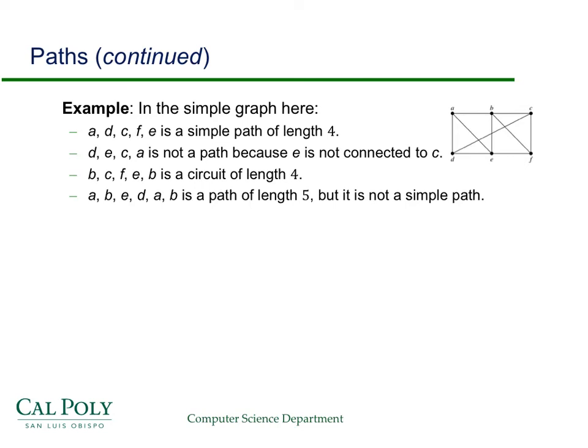This is just a simple example to illustrate paths. This path, D, E, C, A, is actually not a path. If I try to go from D and then go to E and then go to C, there's no edge. So that's not a path. The path in this last case has length five, but it's not a simple path because you have the edge A to B appear more than once.